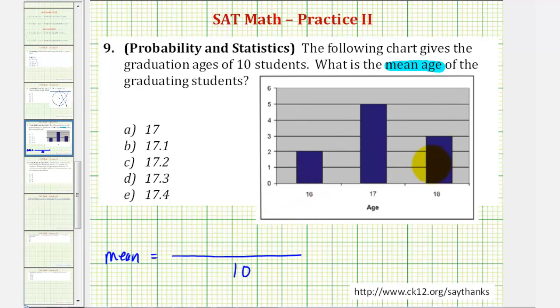Instead of adding all these ages up, we can use multiplication. Notice two students were age sixteen, so we can write two times sixteen plus five students were seventeen, so five times seventeen plus three students were eighteen, so we have three times eighteen.